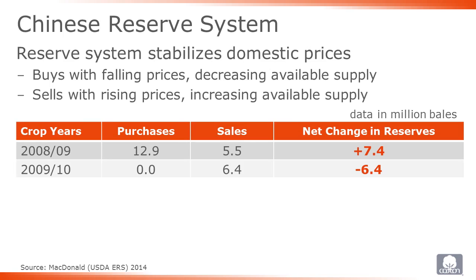In periods of rising prices, the reserve system can sell the cotton it purchased. When sales from reserves take place, available supply increases, and this may limit upward movement in prices.